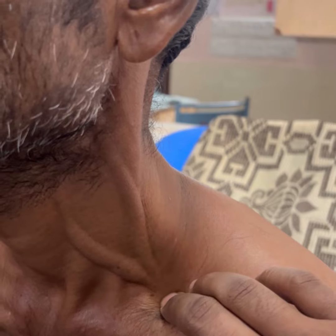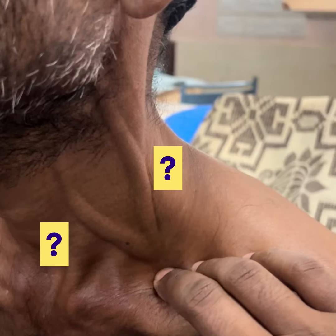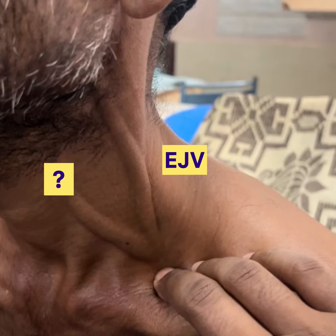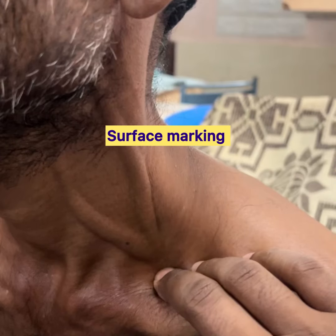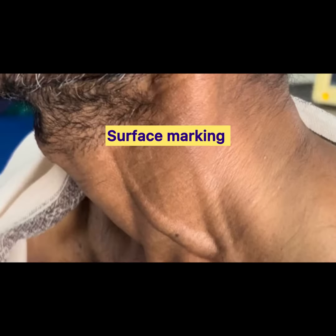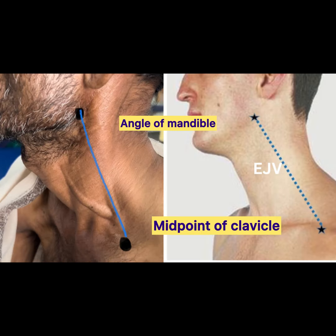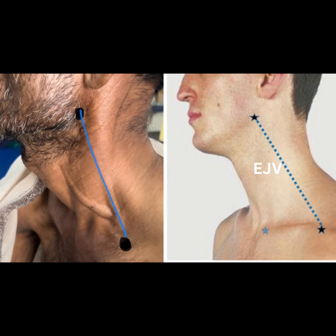What are these two veins? One is the external jugular vein. Let us study the surface marking of the external jugular vein. The first point is the angle of the mandible, and the second point is the midpoint of the clavicle.